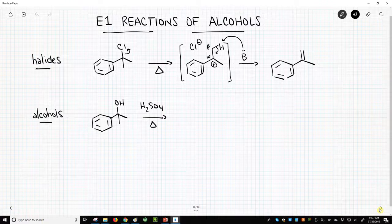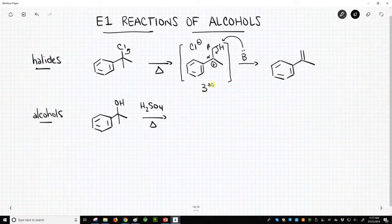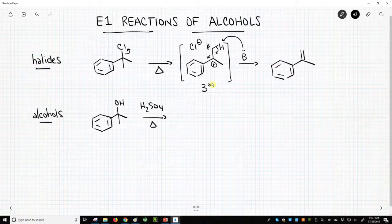We warm this up, and if the conditions are all right, we will lose our halogen. In this case, a chloride will make a carbocation. This is a nice, stable, tertiary carbocation. There's also a resonant stabilization with the benzene ring next door.